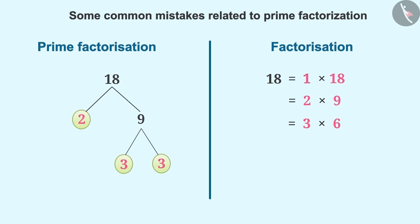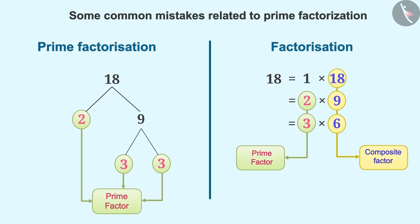For a clear understanding, it is important to know the difference between factorization and prime factorization. Factors obtained by the factorization method can consist of both prime and composite numbers, but factors obtained by the prime factorization method can only be prime numbers.